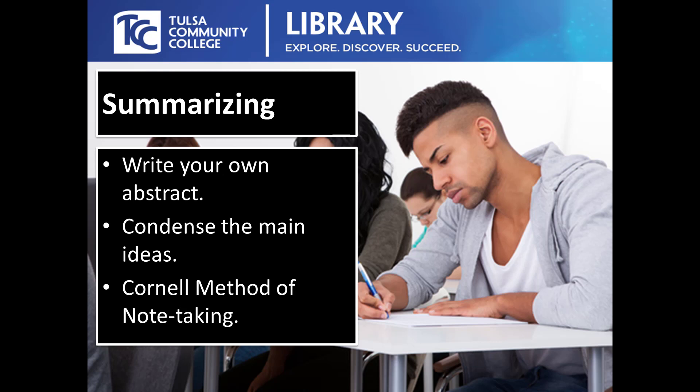A similar process to marginalia is summarizing. Write your own brief abstract or summary about the article. This practice forces you to think about the subject material and decide what is most important to you. You have to condense the material, which solidifies your understanding and memory of it. The Cornell method of note-taking utilizes the summarizing process — in the Cornell method, you summarize your notes from a lecture at the bottom of a page.